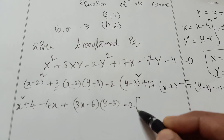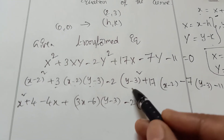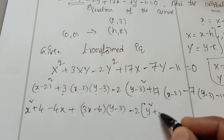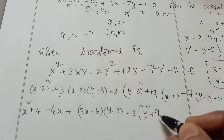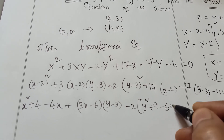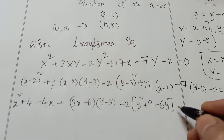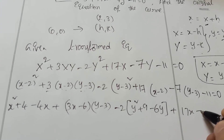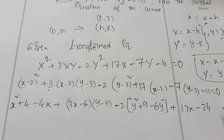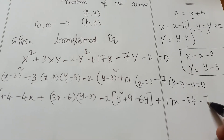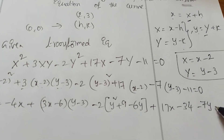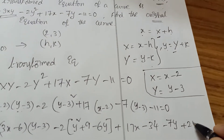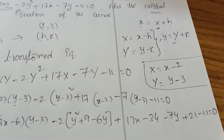Expanding: minus 2 times (y square plus 9 minus 6y), gives minus 2y square. Then plus 17x minus 34. And minus 7 times (y minus 3) gives minus 7y plus 21. Minus 11 equal to 0.